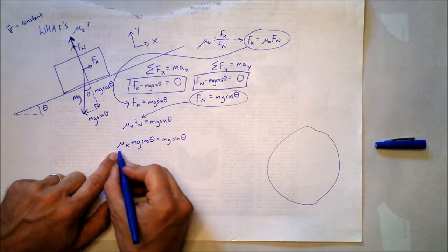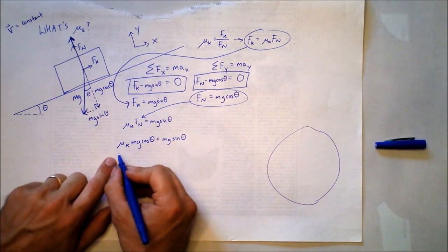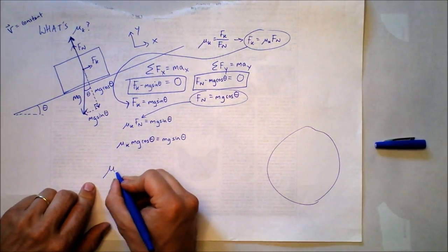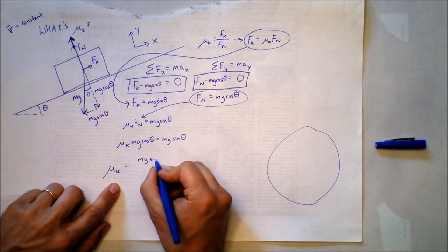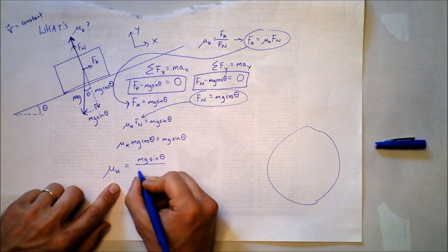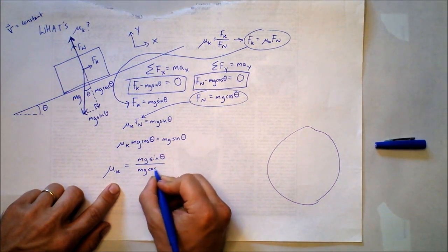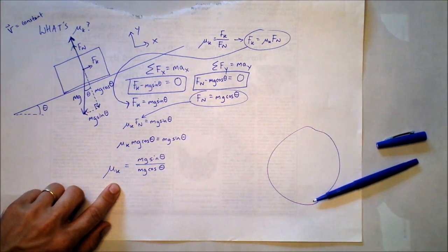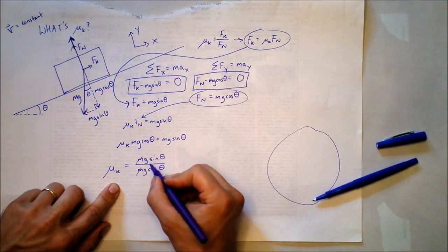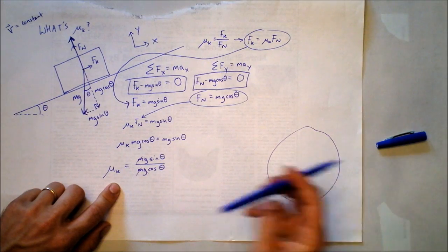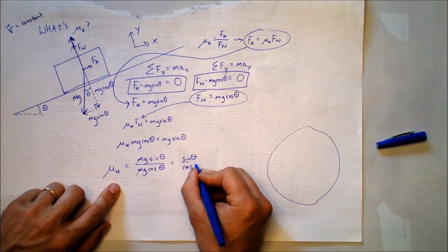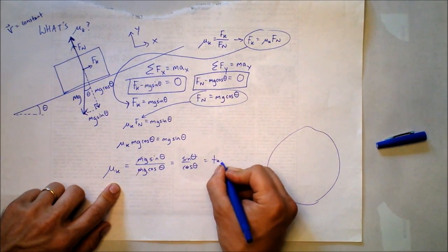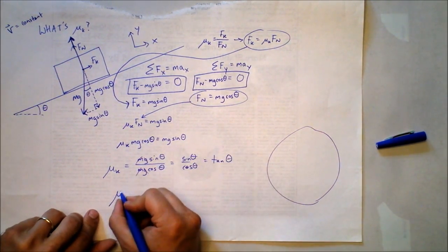We're trying to find mu sub k. Now we've got just that single equation, and we see that mu sub k is equal to mg sine theta divided by mg cosine theta. Get out the purple marker, m's cancel, g's cancel. Now we've got sine of theta over cosine of theta, which is the definition of tangent of theta.